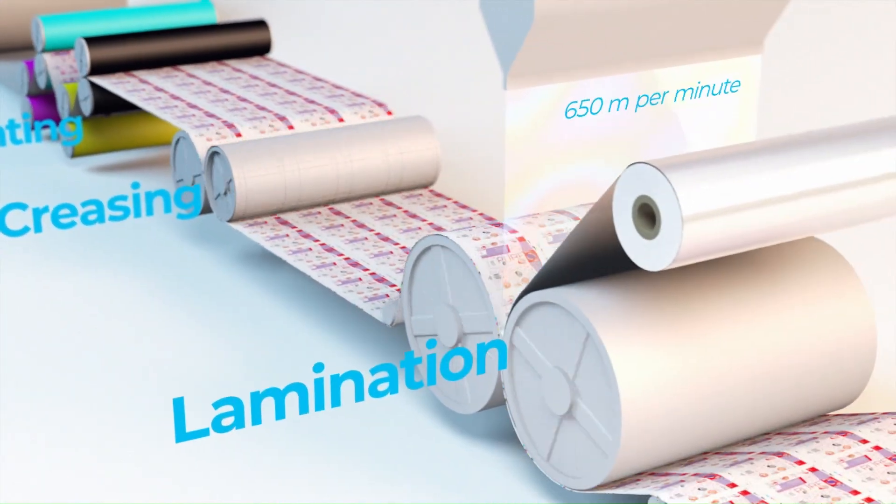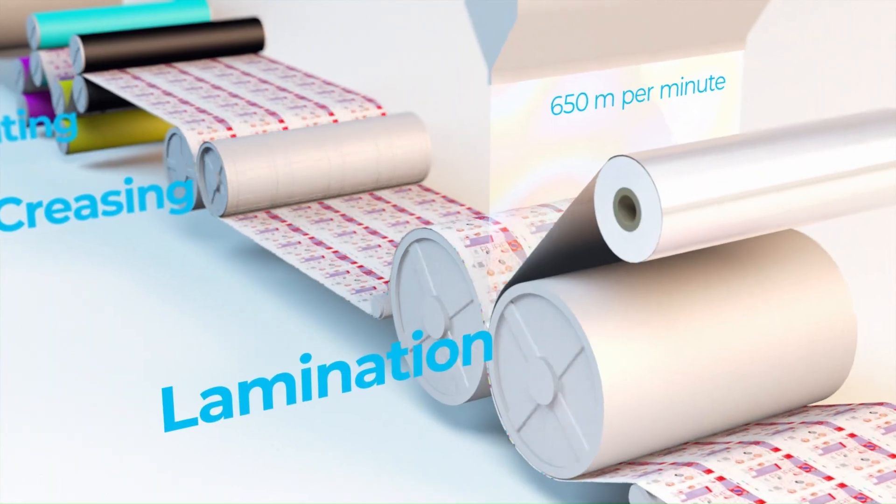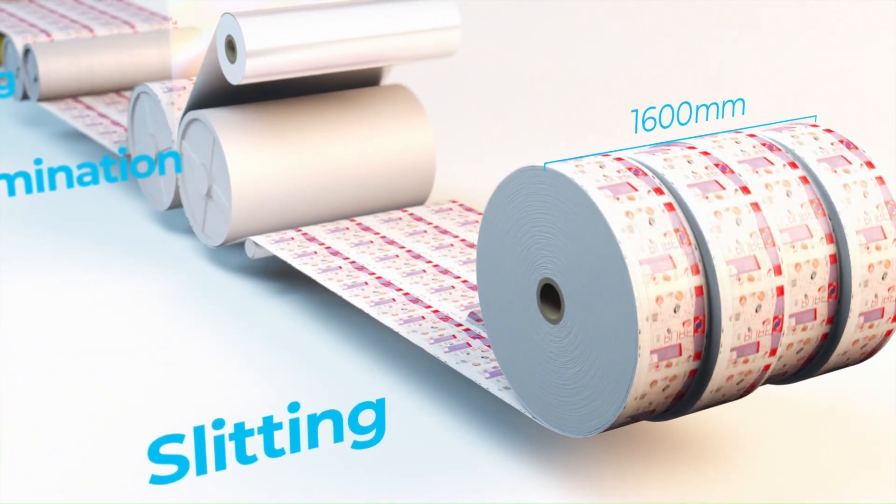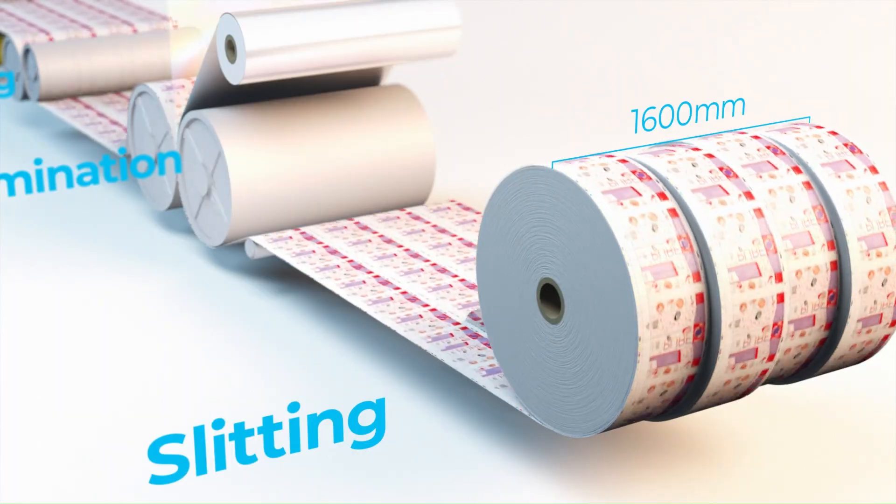Next we laminate it at high speed. And finally we slit the big rolls down to the right size for our filling machines.